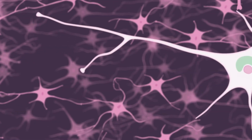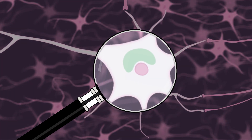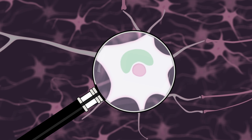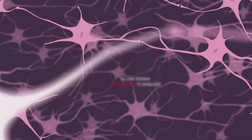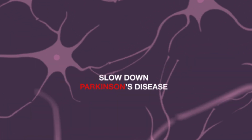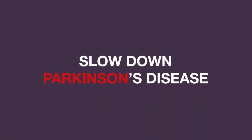In 2018, reducing the potentially toxic effects of alpha-synuclein is a major objective of Parkinson's disease research. Numerous trials involving people with Parkinson's disease are ongoing. Researchers are making every effort to find treatments that may slow down or stop the progression of the disease.